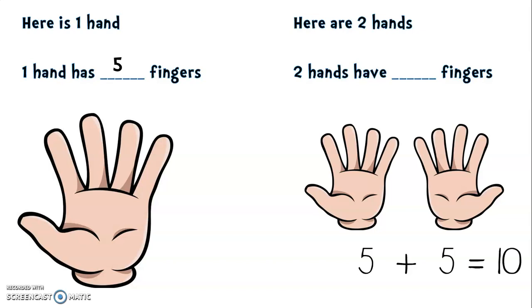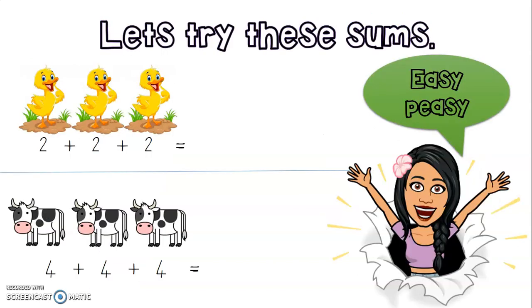Let's try different examples. Here are three ducks. We want to know how many legs are there all together. So our sum is 2 + 2 + 2. So we could count in twos to get our answer: two, four, six. And yes, that is our answer. Well done!